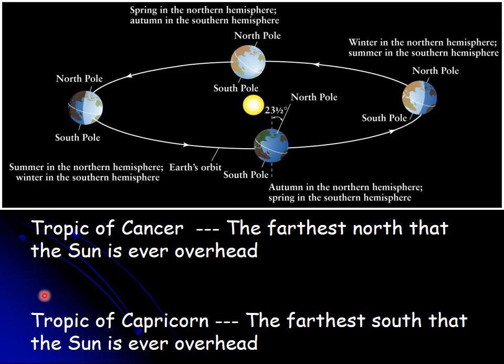If you're between the tropics, the sun can be overhead. At the equator, the sun is overhead twice a year — the two days it's on the celestial equator, the equinoxes. In half the year it's north of overhead, and in the other half it passes south of overhead. Mexico City is about 17 degrees north latitude, which is less than 23.5 degrees, so two days out of the year the sun actually passes directly overhead at midday there. For about a month it passes north of overhead, and for the rest of the year it passes south of overhead.